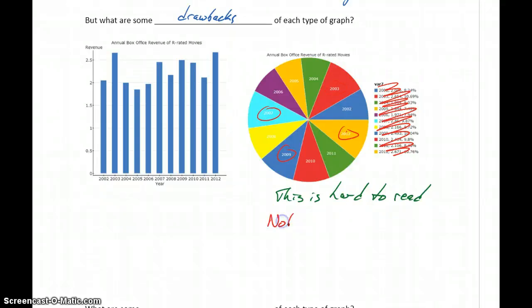So in general, pie charts are not used in professional statistical reporting. When you have a lot of slices like this, it becomes tough to make those determinations, which one's biggest, which one's smallest.